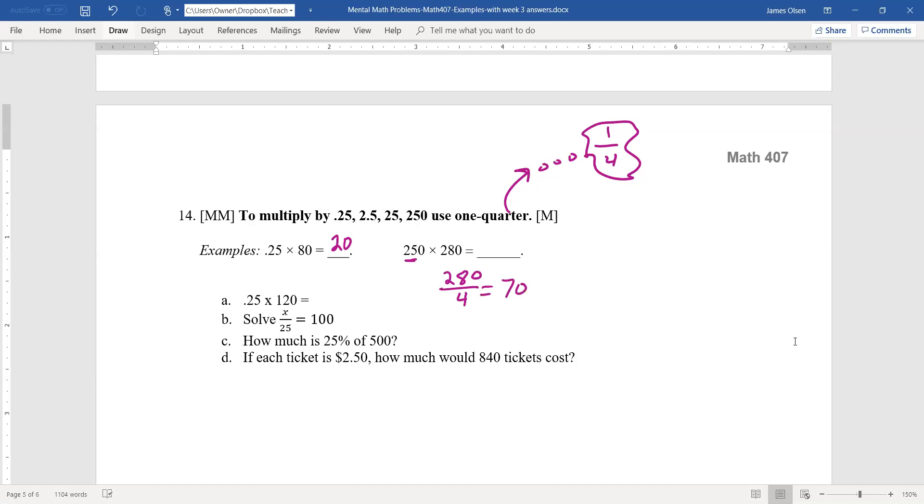So I know that my answer is going to have a 7, and I just need to figure out the number of zeros. Is it 7.0, 70, 700, 70,000, whatever? So I'm going to estimate.